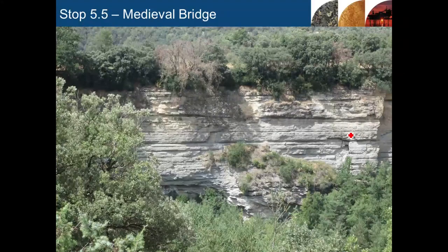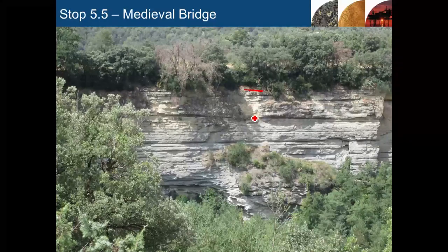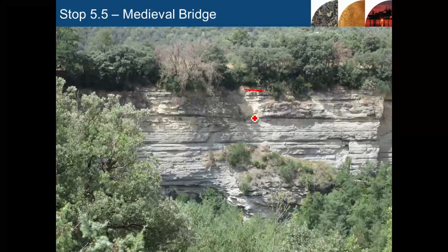Just as a reminder, if you look directly across the river, you can see the top surface where we're making our observations, and you can see the upper couple of metres. It's harder and paler coloured, and we want to think about why that is.